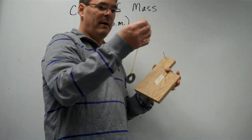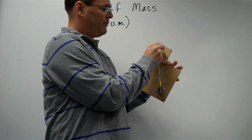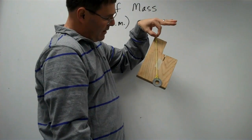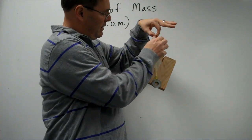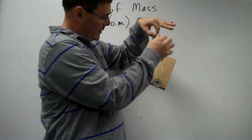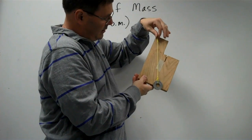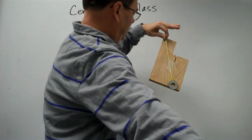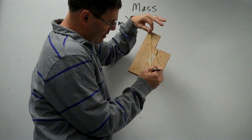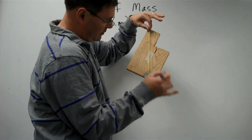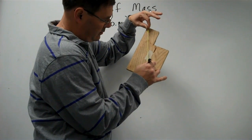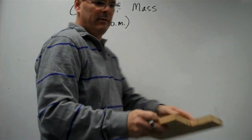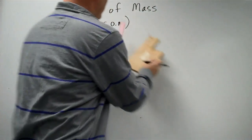So I'll take my plumb bob, hang it from the nail, and now I know that my center of mass is somewhere along that line. I'll draw a point where the string is and then connect that point with my ruler.